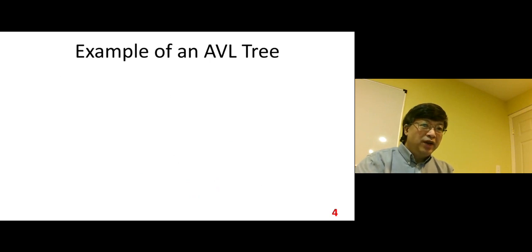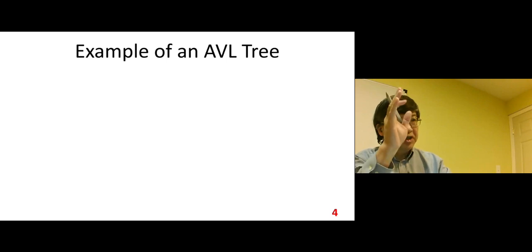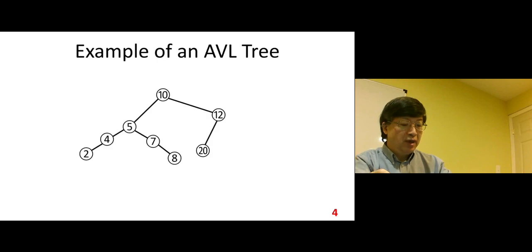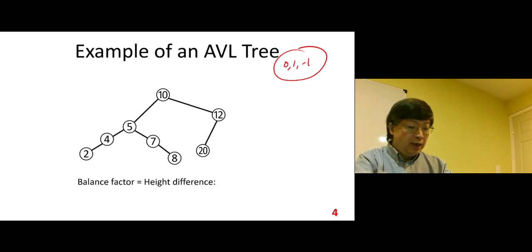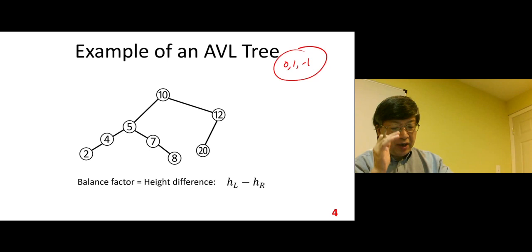Example. Before we look at the rotation operations, let me show you a simple example of an AVL tree. Based on the definition, this is a valid AVL tree. Let's calculate the balance factor of each node and see if it satisfies the condition of an AVL tree. The balance factor should be 0, 1, or negative 1, otherwise it won't be a valid AVL tree. The balance factor based on the definition is the height difference: H sub L minus H sub R, left height minus right height.